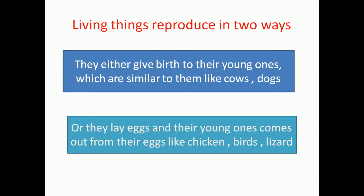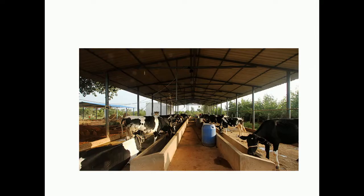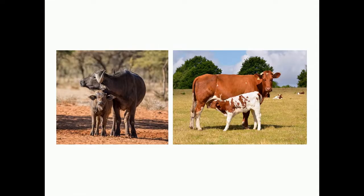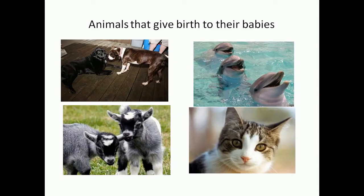Now we shall study the animals which give birth to their young ones. Have you ever been to a farm? If you have visited a farm, you must have seen the young ones of buffalos or cows. The babies look similar to their mother and they drink milk from their mother. These kinds of animals that give birth to their young ones and feed them on their milk are called mammals.